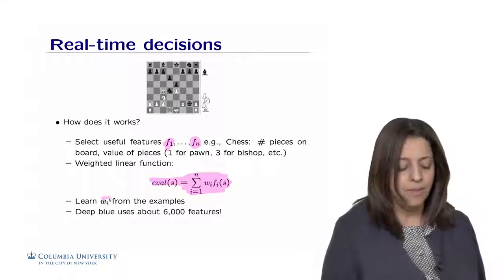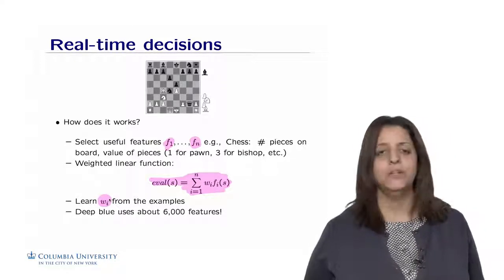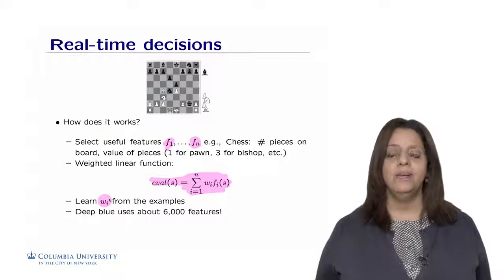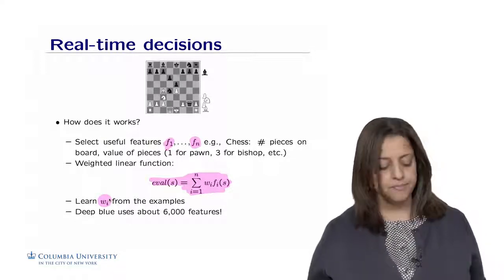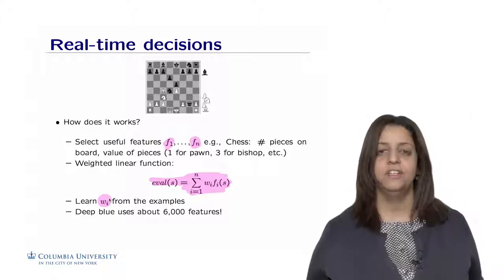So we're going to be able to learn the weights using machine learning. This is what we're going to see in the next lectures. So we're going to have a set of examples to learn from, the previous matches, for example. And we can, using these functions, devise the weights, learn the weights that can actually give us the best evaluation function for chess.